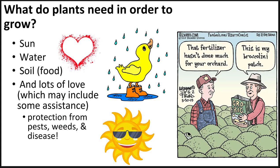Plants need sun for photosynthesis in order to grow. Obviously, it's difficult for farmers to control the amount of sun for most crops. Plants need water, and most farmers do have some control over water through irrigation. Soil contributes to plant growth in many ways, and finally, plants need protection from pests, weeds, and disease.